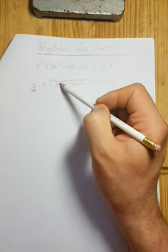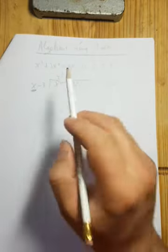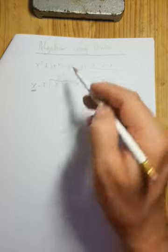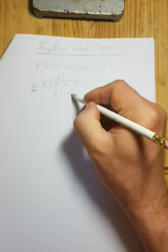Okay, so x cubed divided by x is x squared. All right, now what we do is we multiply the whole divisor by x squared. So x by x squared is x cubed, x by minus 3 is minus 3x squared.